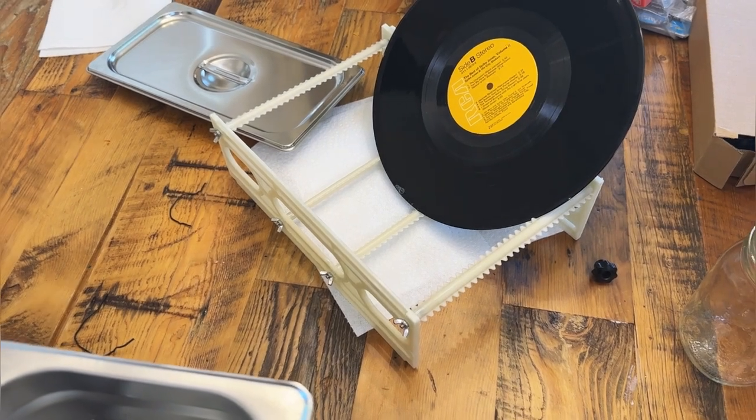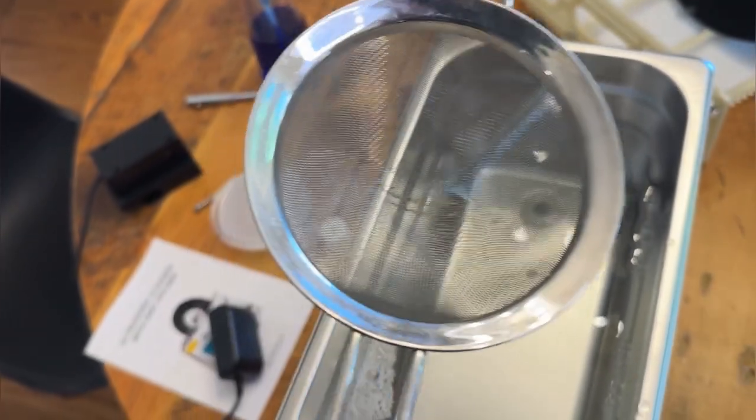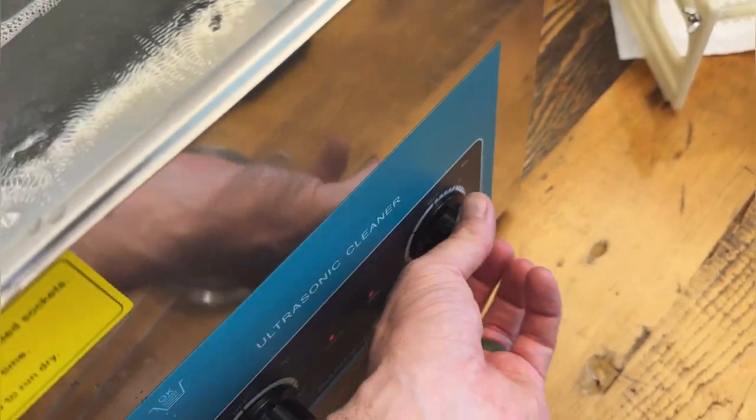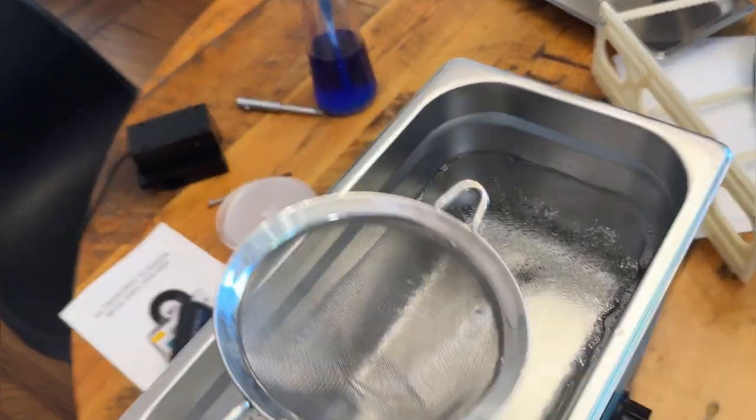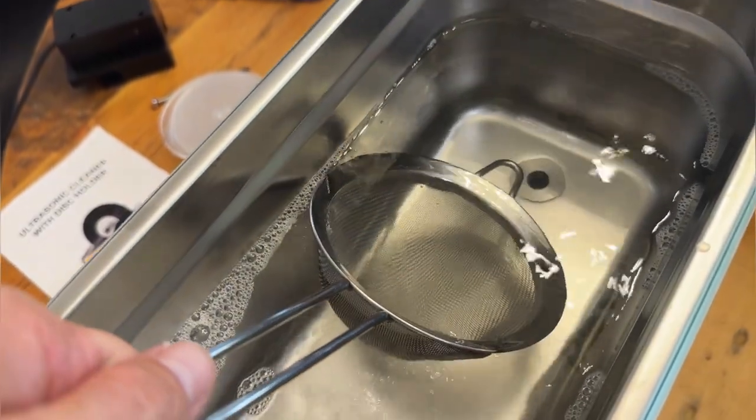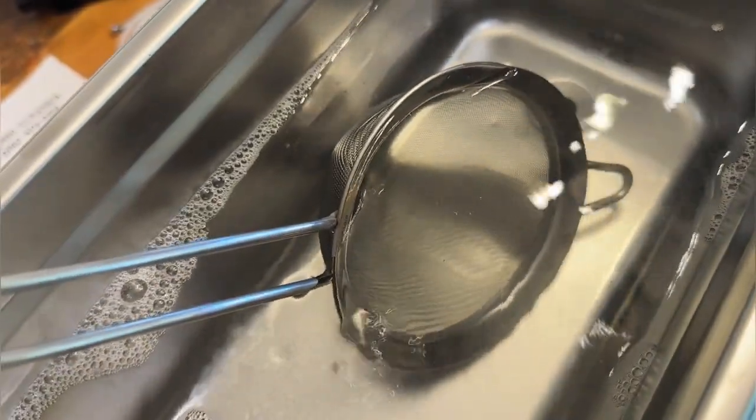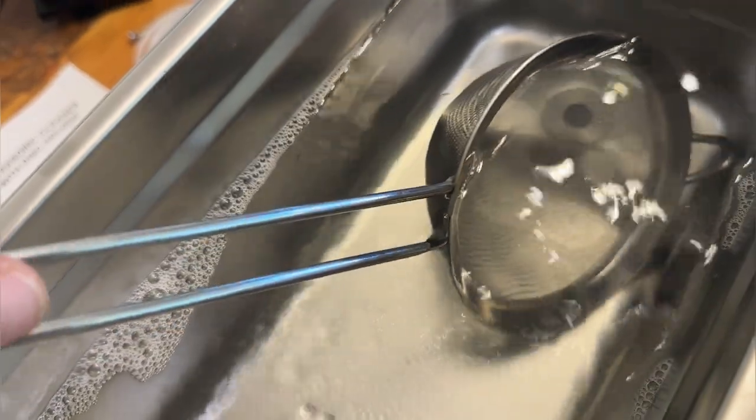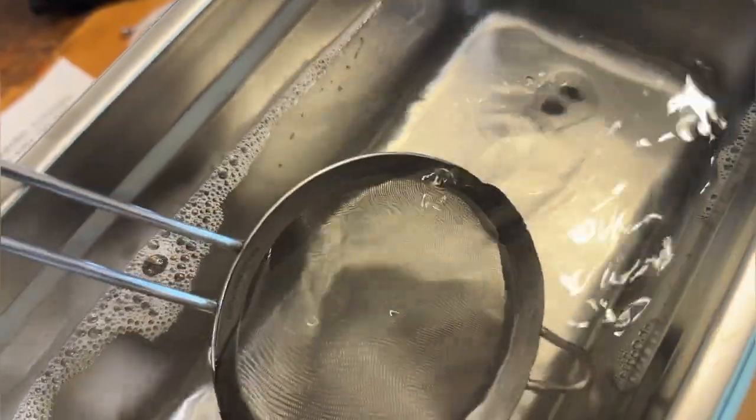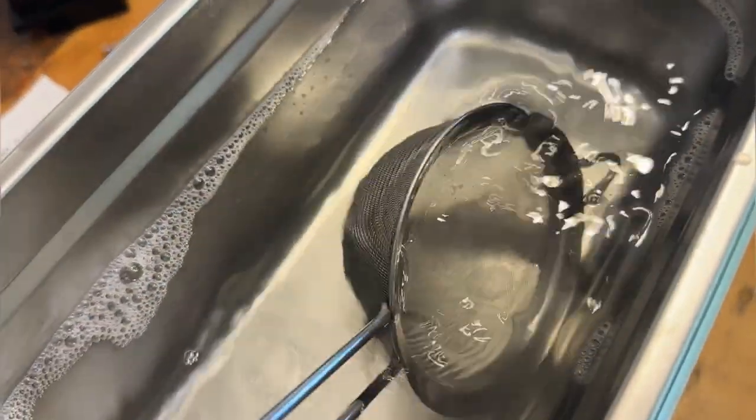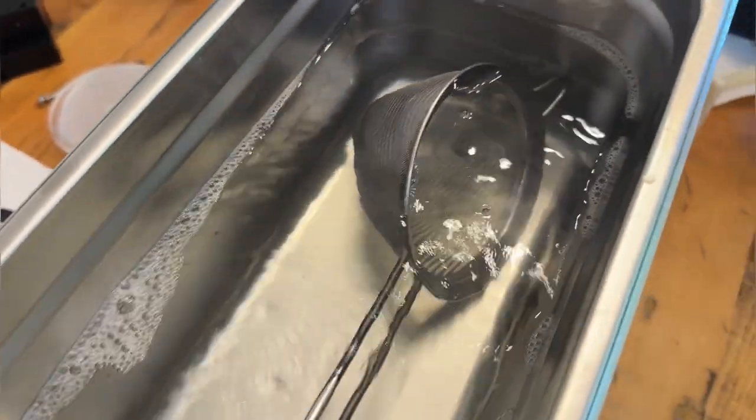All right guys as you can see we've got our record in our drying rack. We're going to go ahead and put our mesh strainer in here. We're going to get our heat turned on. We're going to turn our timer on. There it goes. We're going to let that get nice and clean. Just leave it right in there. Nothing to it.